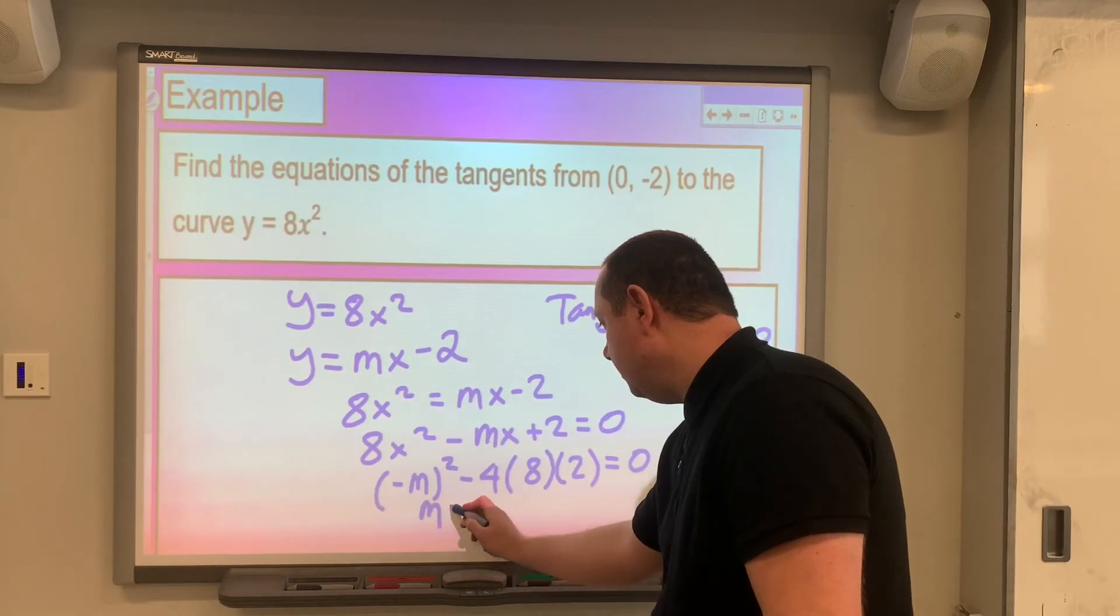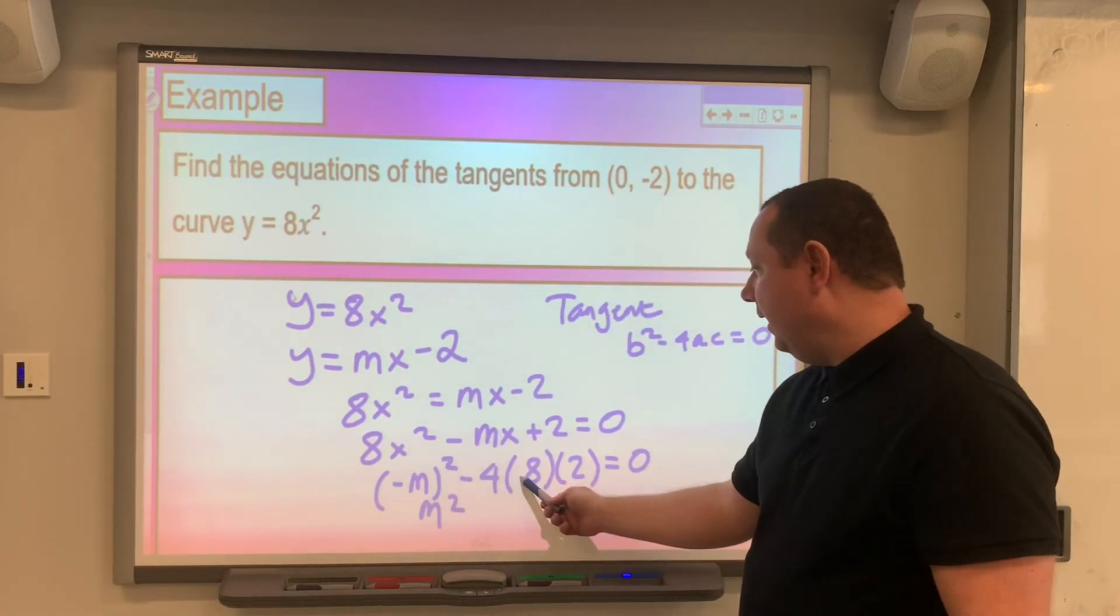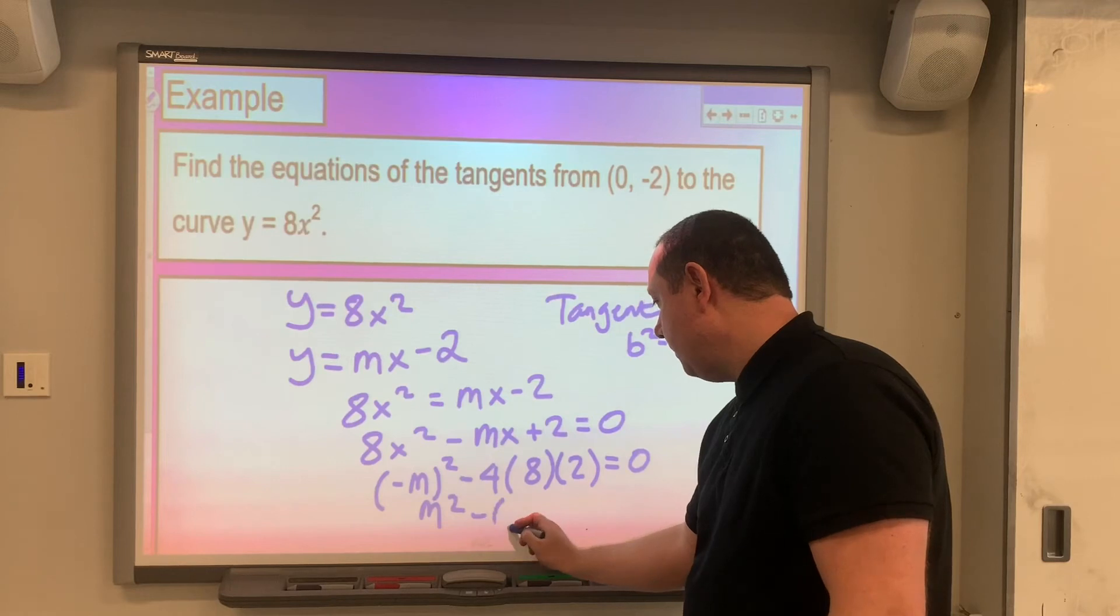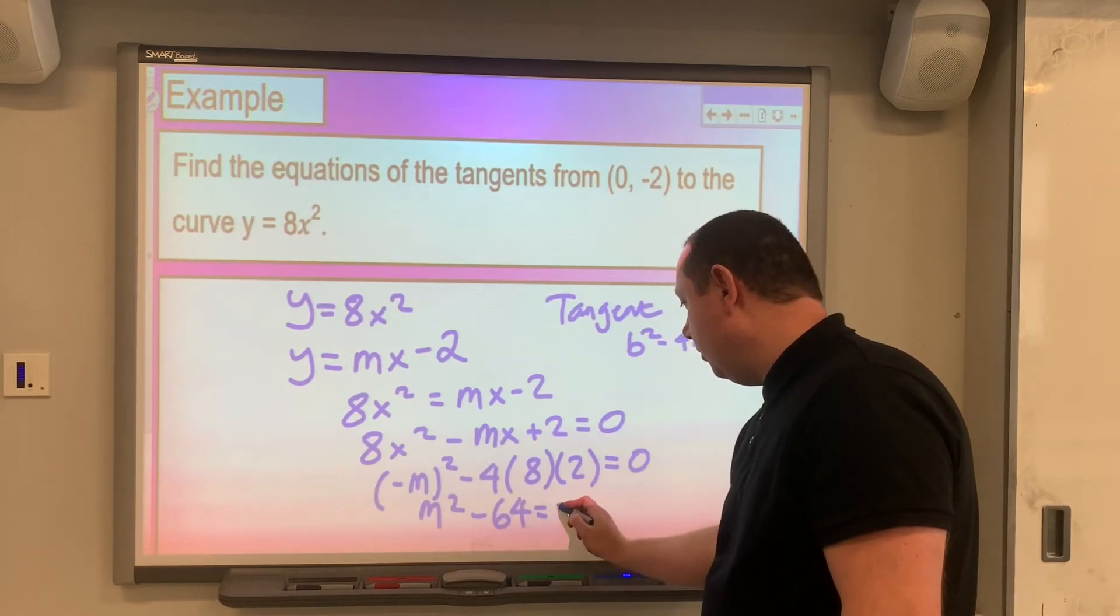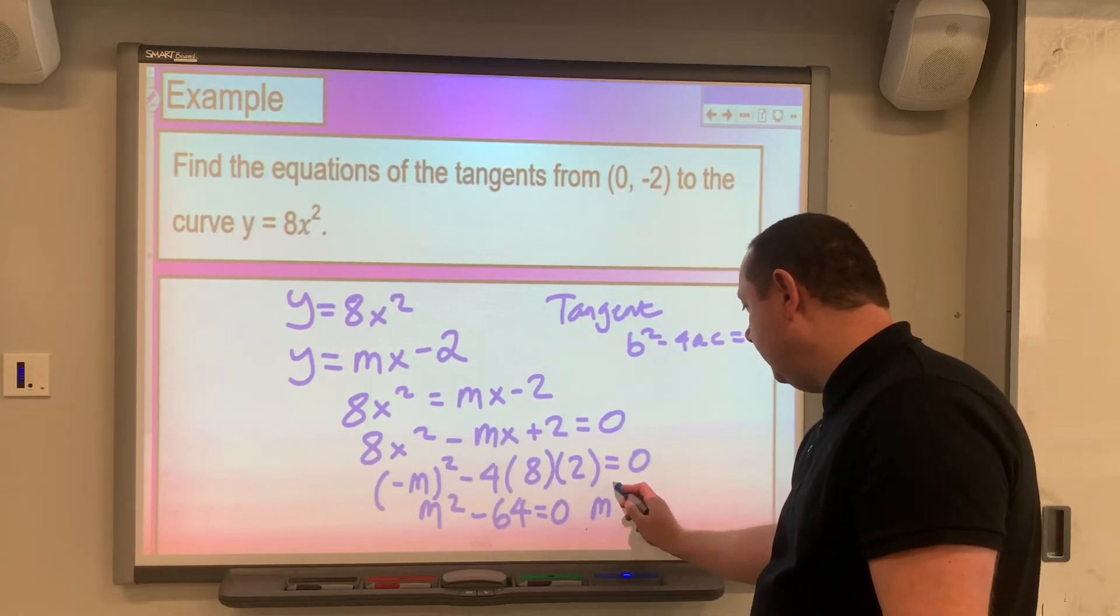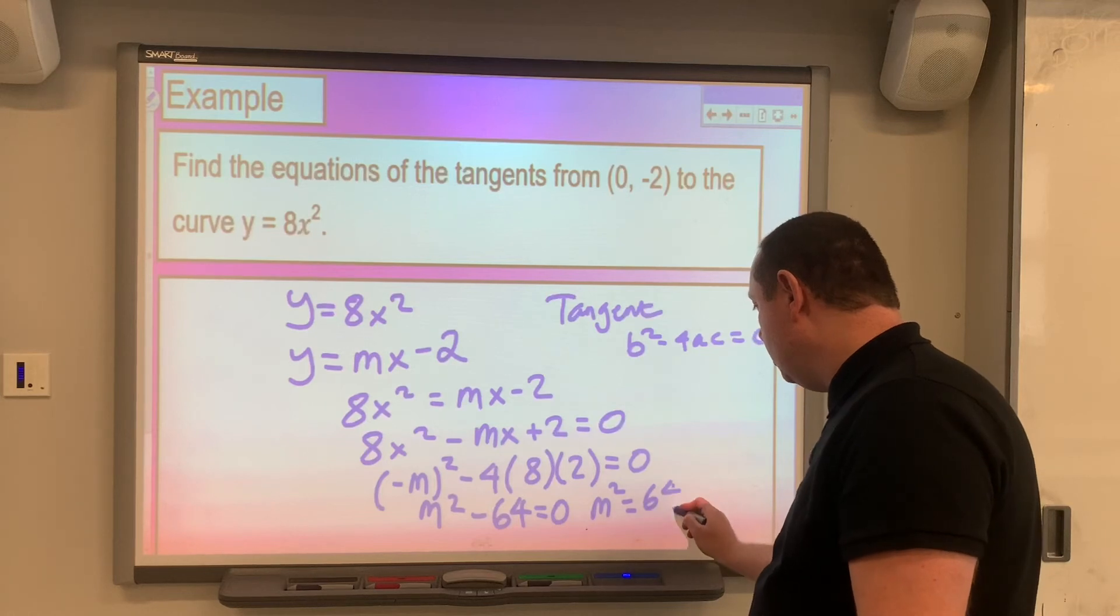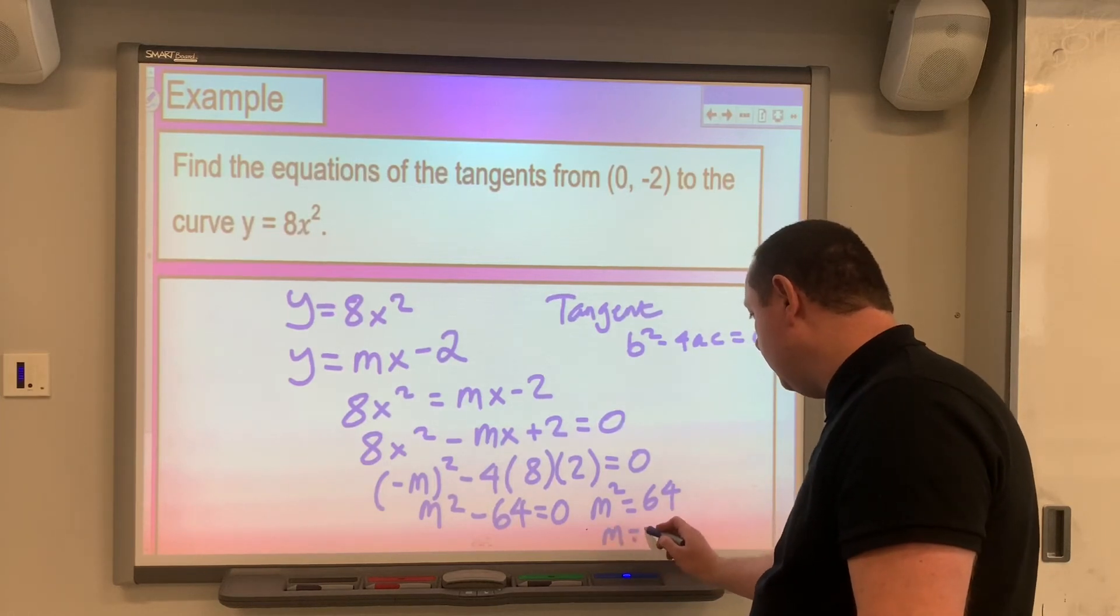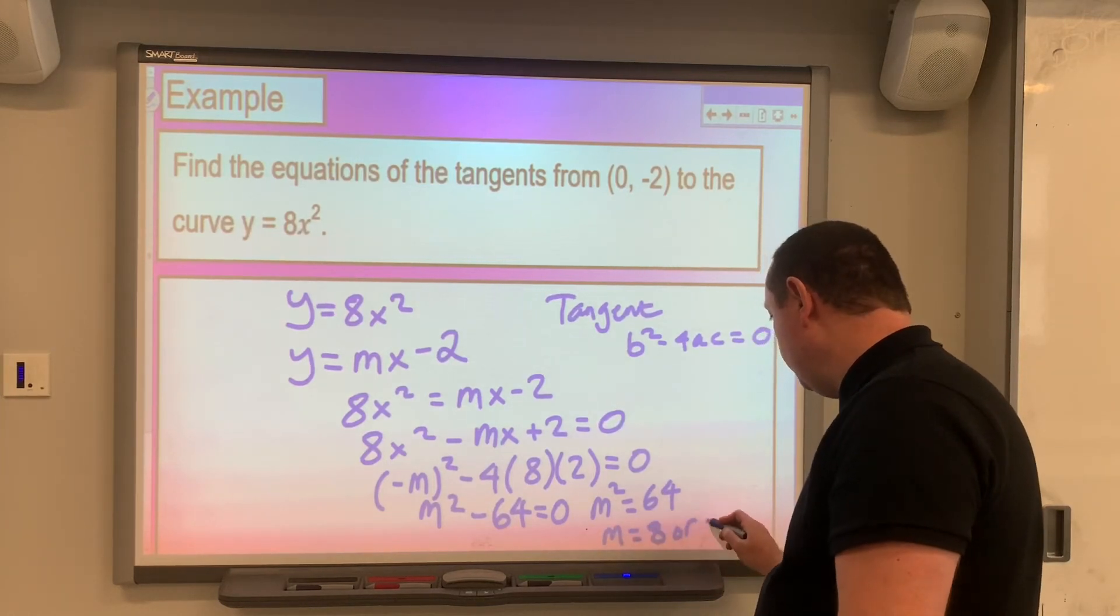So that's m squared. 4ac is 8 times 2 times 4 is 64. Nice and simple equation to solve. M squared is equal to 64. So m must be 8, or m must be minus 8.